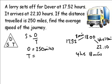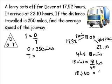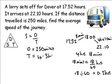We can't substitute this directly into the formula for speed because we have a mixture of units — hours and minutes. We can only substitute once it's all in hours. So we need to write the 18 minutes as a decimal fraction of an hour. There are 60 minutes in an hour, so 18 minutes is 18 sixtieths of an hour. Carrying out the calculation, 18 divided by 60 gives 0.3 hours. So the total time is 4 hours and 18 minutes, which is 4.3 hours.